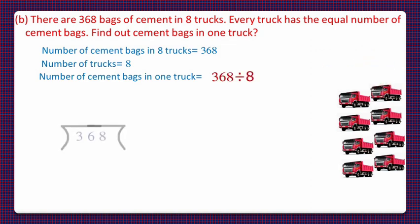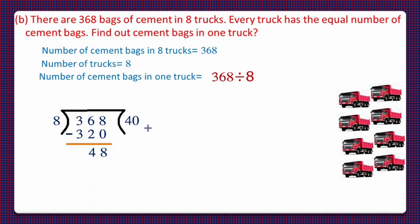Dear students, 368 are number of bags and 8 are the number of trucks. So, if 40 cement bags are there in each truck then total becomes 320. And on subtraction of 320 from 368, 48 bags are still remaining. So, if 6 more bags are there in each truck then 8 into 6, 48 becomes the value and 48 minus 48, 0.